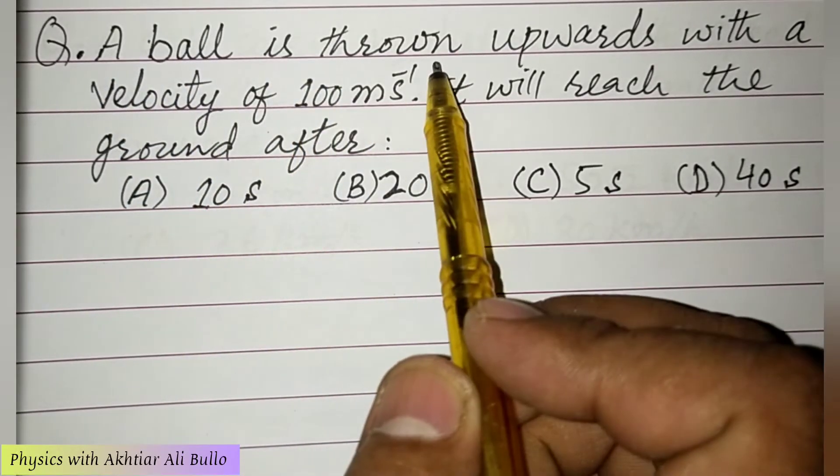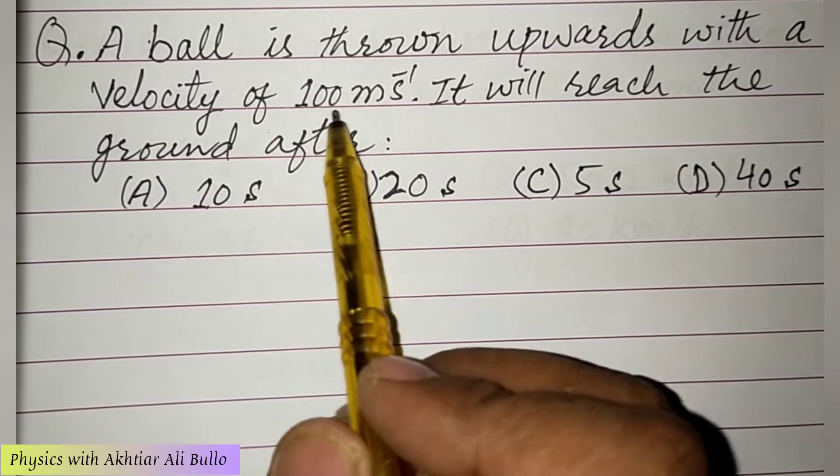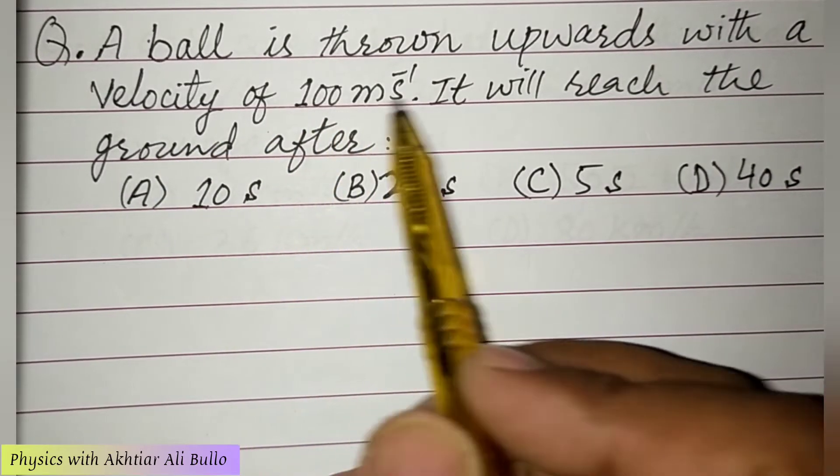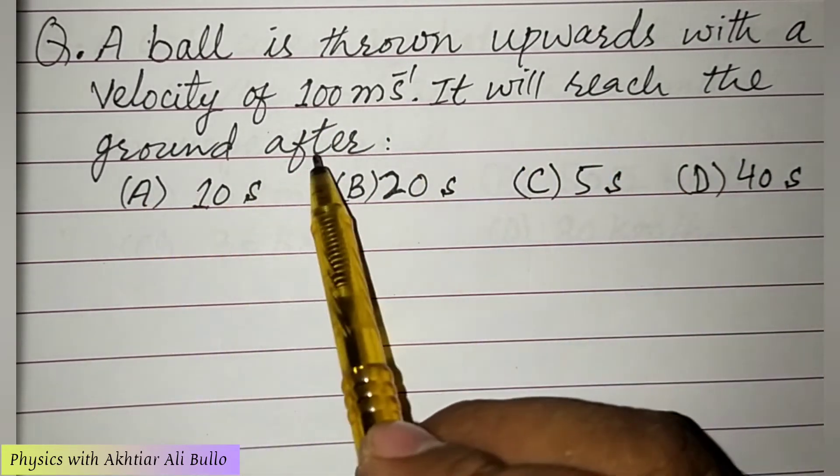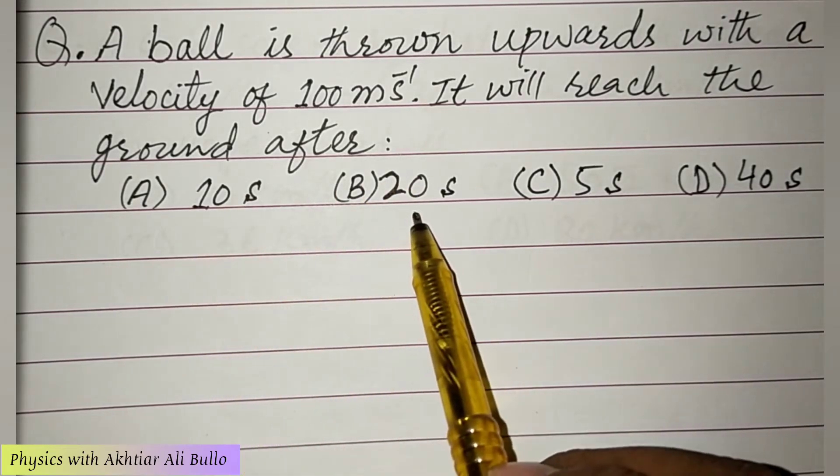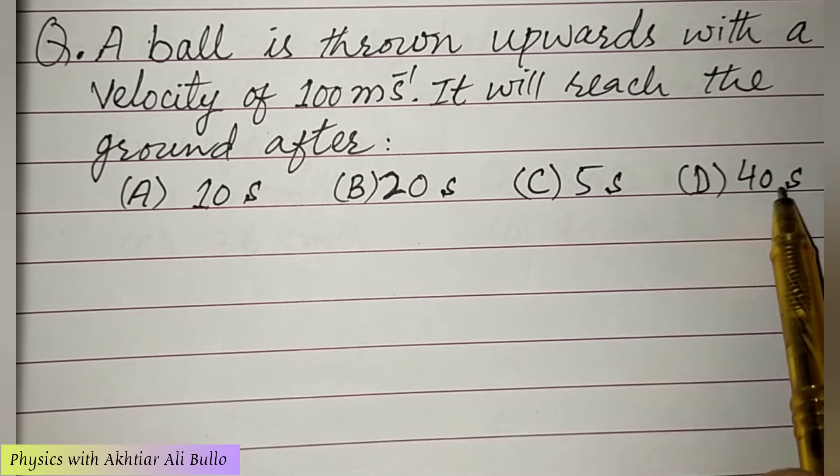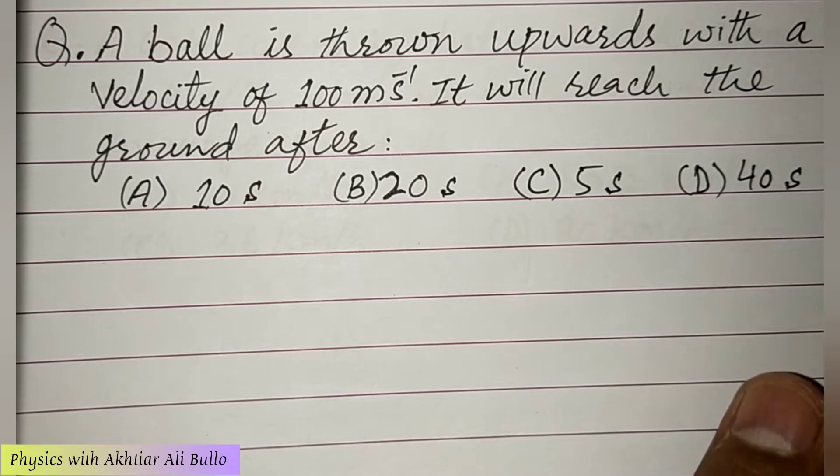A ball is thrown upwards with a velocity of 100 meter per second. It will reach the ground after: A) 10 seconds, B) 20 seconds, C) 5 seconds, D) 40 seconds. So we have to calculate the total time of flight.